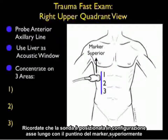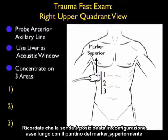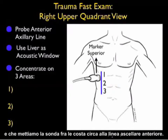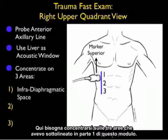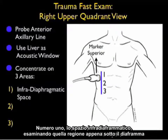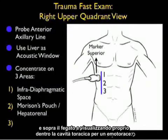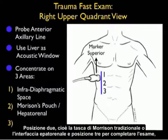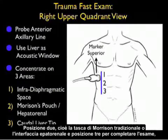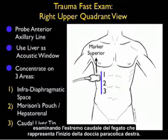Remember that the probe is positioned in the long axis configuration with the marker dots superiorly, and we place the probe in between the ribs at about the anterior axillary line. We want to focus on three areas: Number 1, the infradiaphragmatic space, looking at the region just below the diaphragm and above the liver, and looking into the chest cavity for a hemothorax. Position 2 is the traditional Morrison's pouch or hepatorenal interface, and position 3 is the caudal liver tip, representing the beginning of the right pericolic gutter.